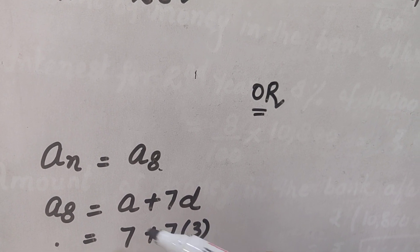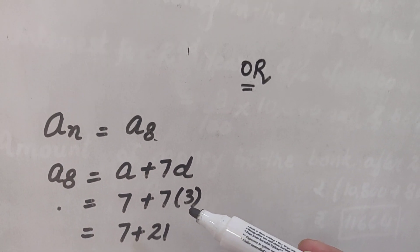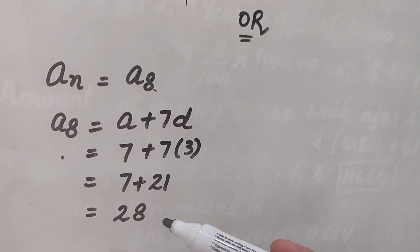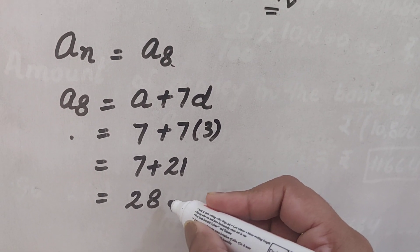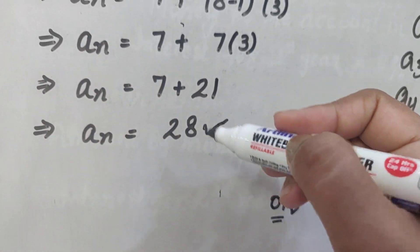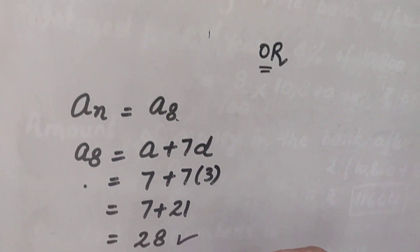And A8 means A plus 7D. Straight away, I have written this. That A8 means A plus 7D. And then you can put the values here to find the value of A8 as 28. Here also, we got 28. And here also 28.